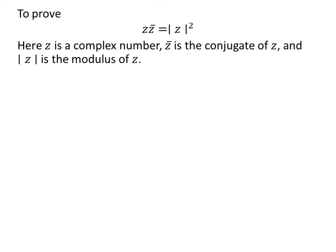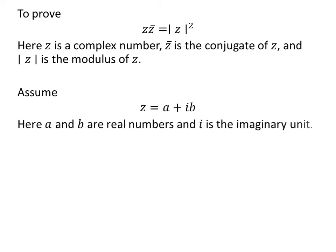Here, z is the complex number. The bar over z denotes the conjugate of z, and the absolute value of z is the modulus of z. To prove the above identity, let us assume z is equal to a plus i times b, where a and b are real numbers and i is the imaginary unit.